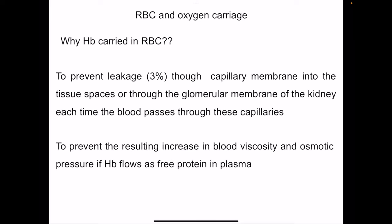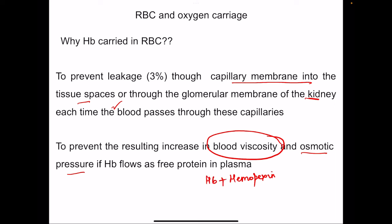If hemoglobin were present directly in blood, being such a large protein, it would increase blood viscosity and osmotic pressure, increasing resistance to flow and blood pressure — so it is better carried within a cell. Second, enclosure prevents leakage through the capillary membrane into tissue spaces or through the glomerular membrane of the kidney. When excessive hemolysis occurs, free hemoglobin in circulation binds with hemopexin to prevent leakage, but when hemopexin is used up, free hemoglobin appears in the renal tubules.